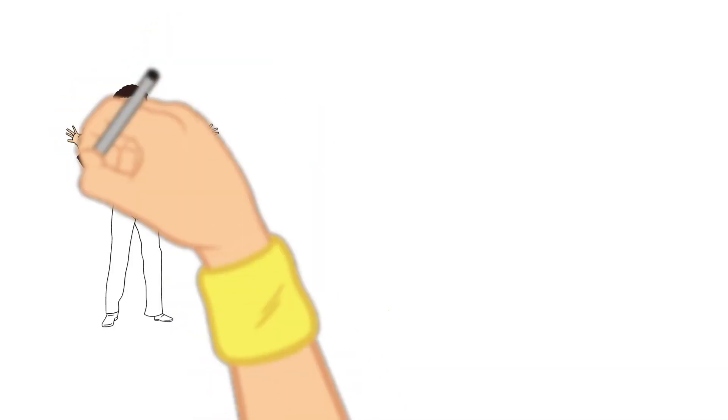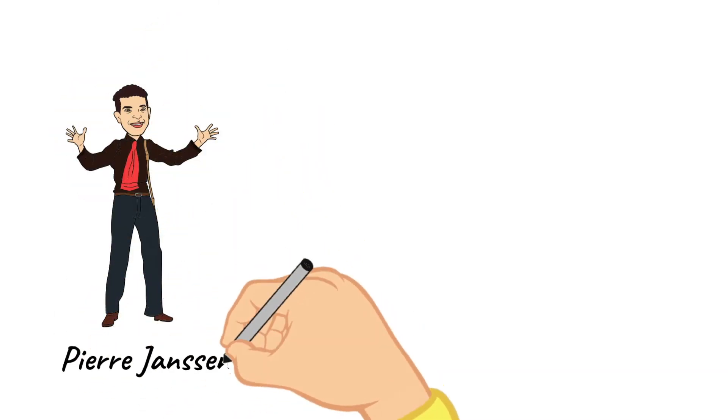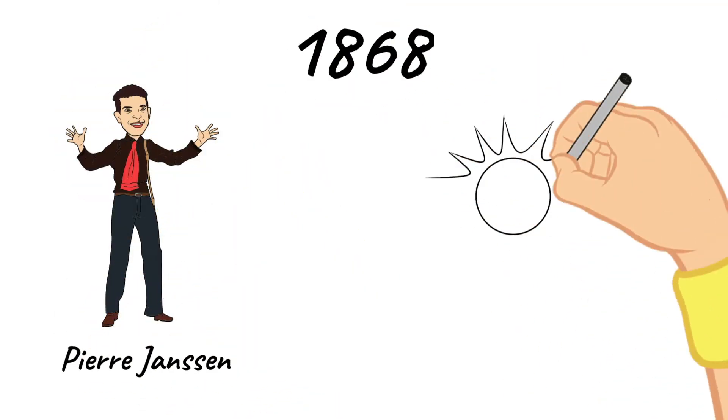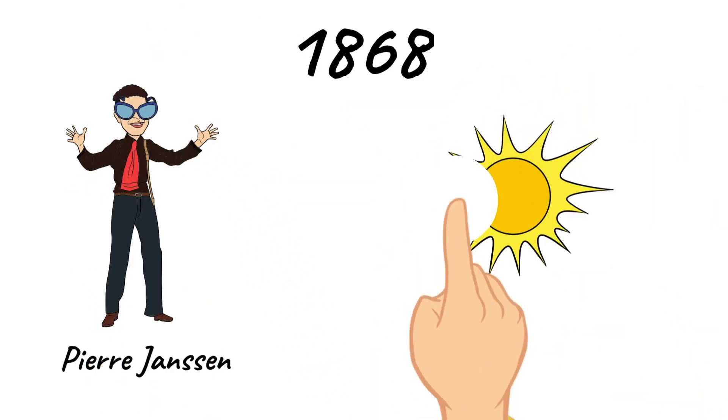Helium was first discovered in 1868 by an astronomer named Pierre Janssen. He noticed the new element when studying a solar eclipse.